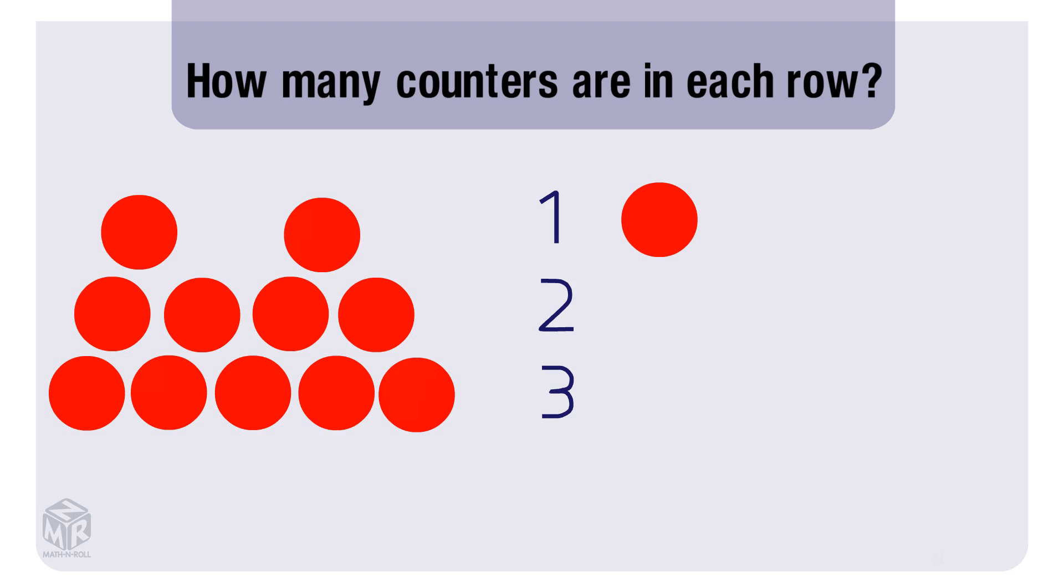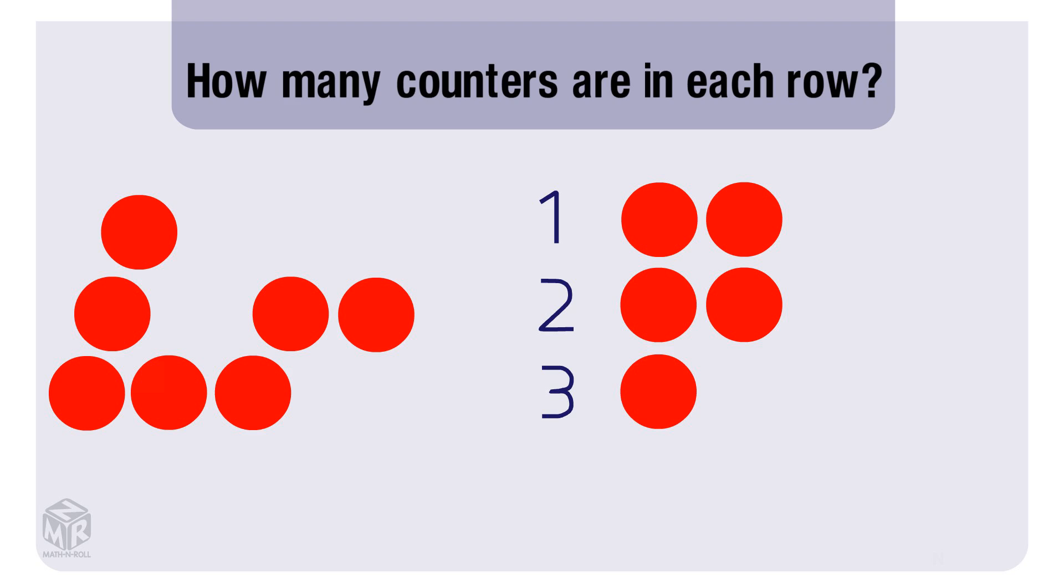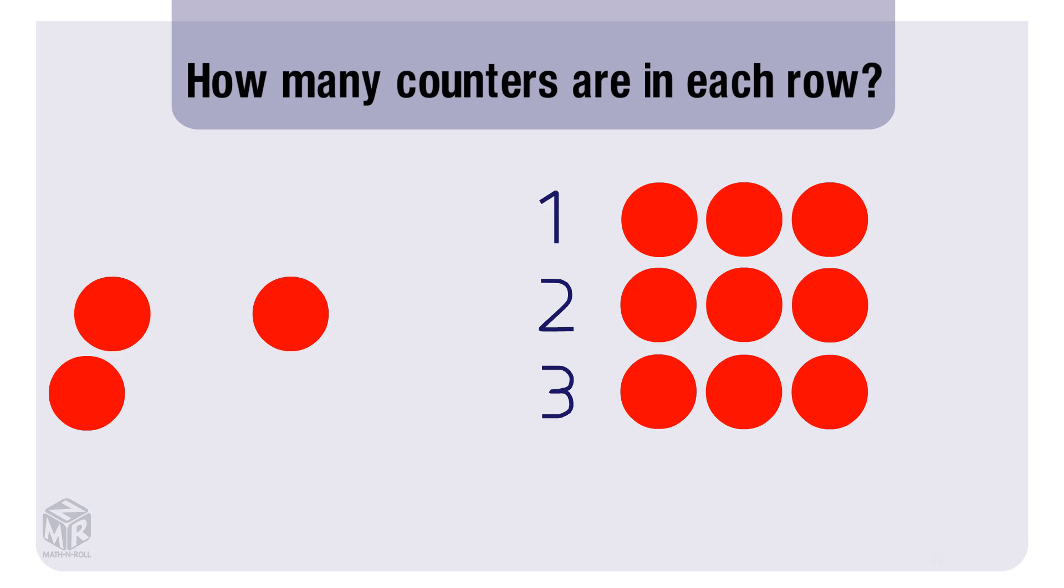We add one to the first row, one to the second, and one to the third. Let's do it again: one to the first row, one to the second row, and one to the third row. Let's do it again: add one to the first row, one to the second, and one to the third. Repeat this process until you run out of counters.